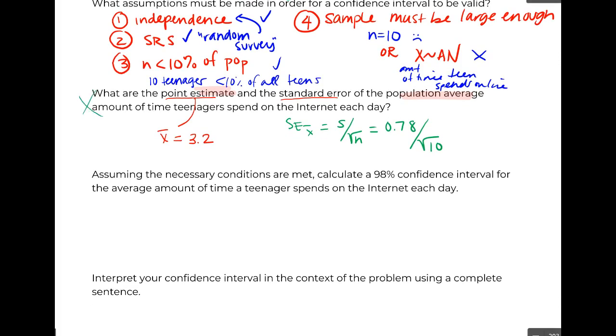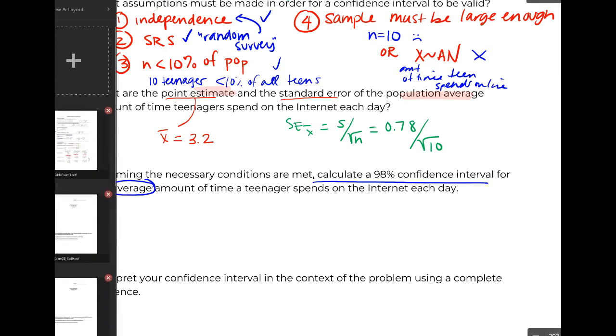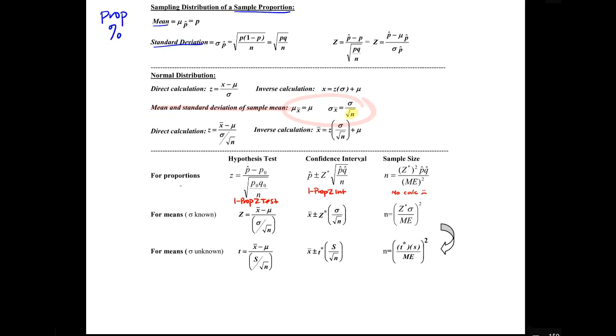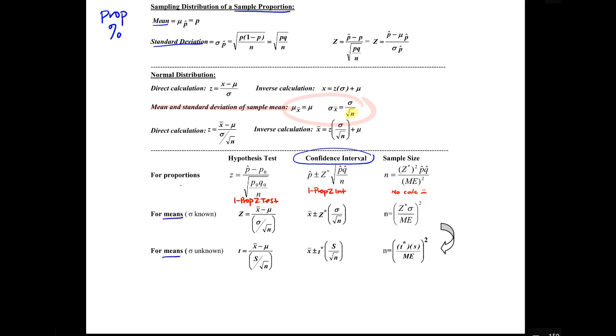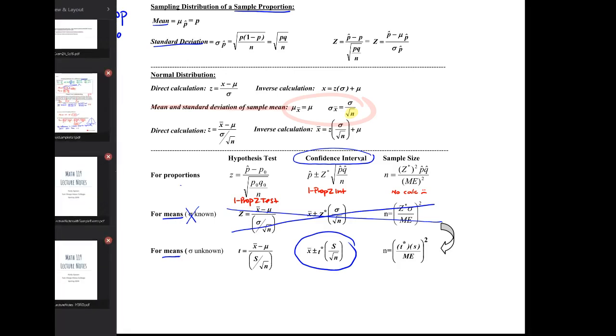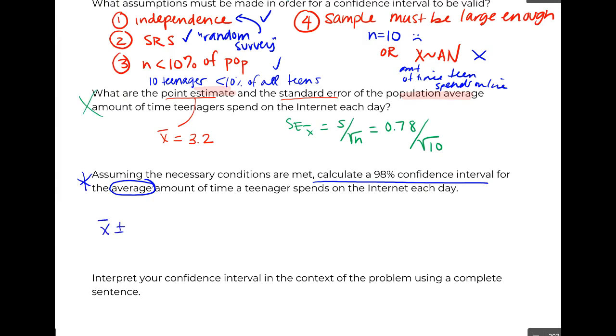This is a silly question. This wouldn't happen on the test. But the next one definitely would. Assuming the necessary conditions are met, so they're basically saying, let's hand wave number four and just say, yeah, sure, it's normally distributed. Calculate a 98% confidence interval for the average amount of time a teenager spends online. So, formula sheet. We want to make a confidence interval. We want to do that for a mean or an average, right? And we're never going to use this row. This is old and antiquated. We're only going to use this row where we don't have the sigma. So we're going to use this formula. X bar plus or minus T star times S divided by the square root of N. So let's plug and chug. We know our X bar is 3.2.